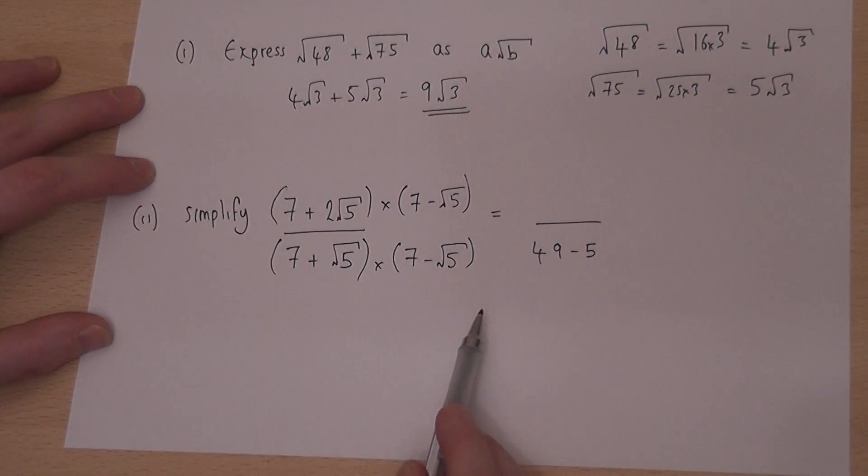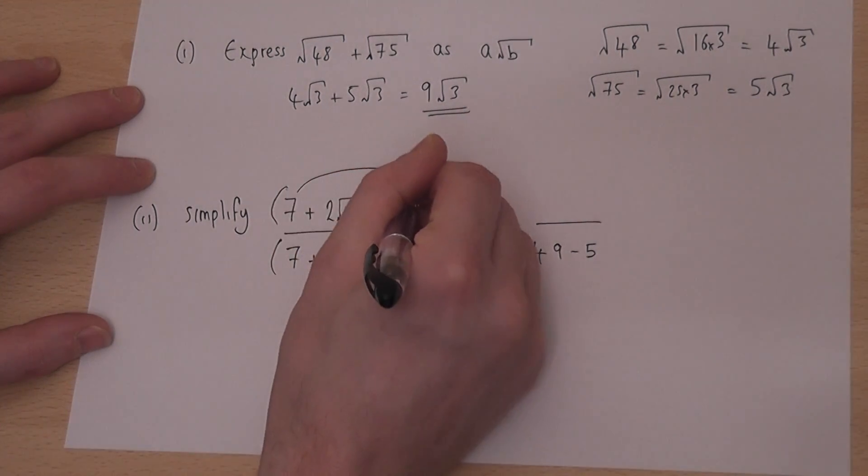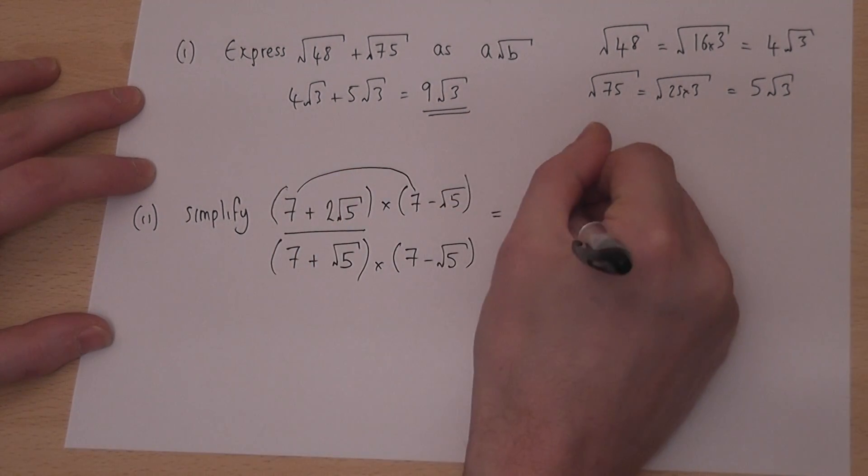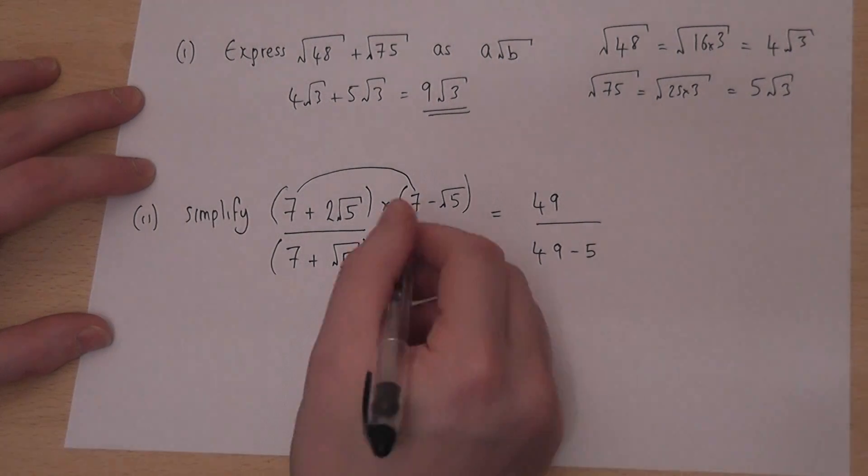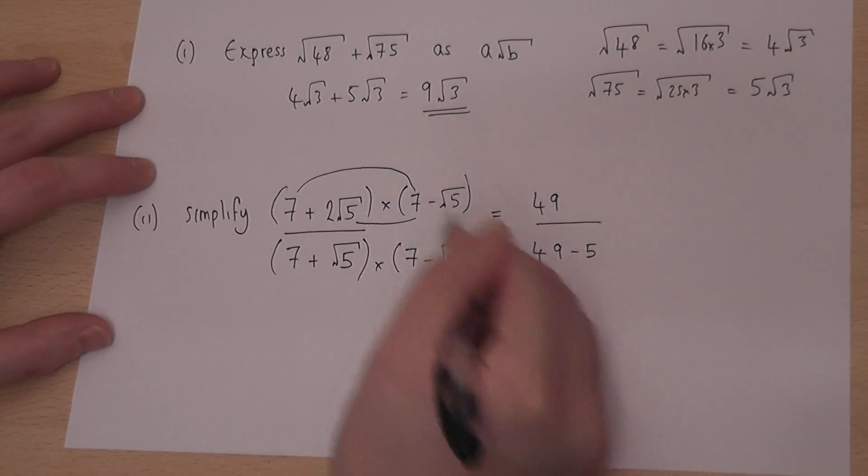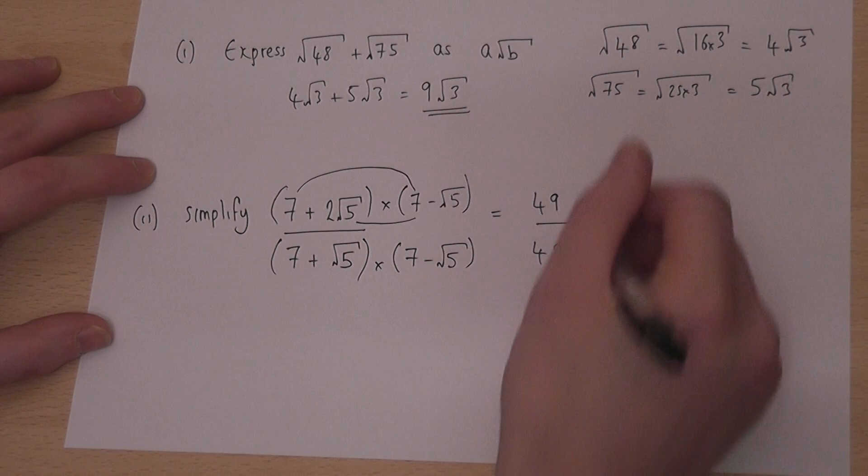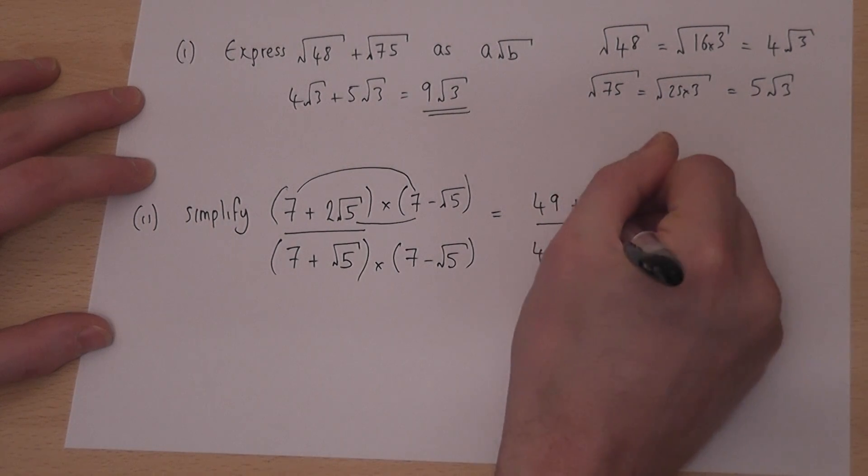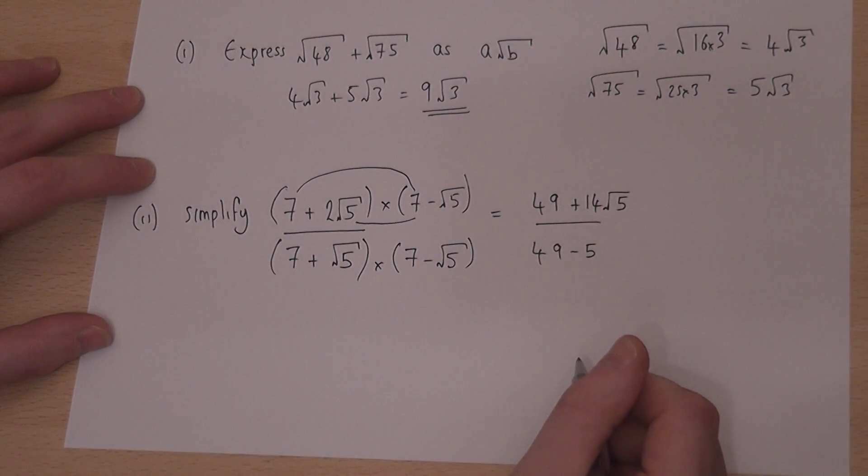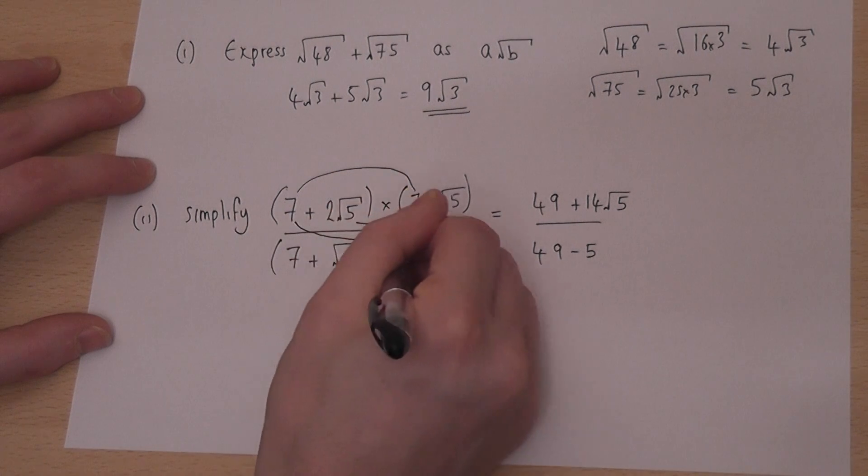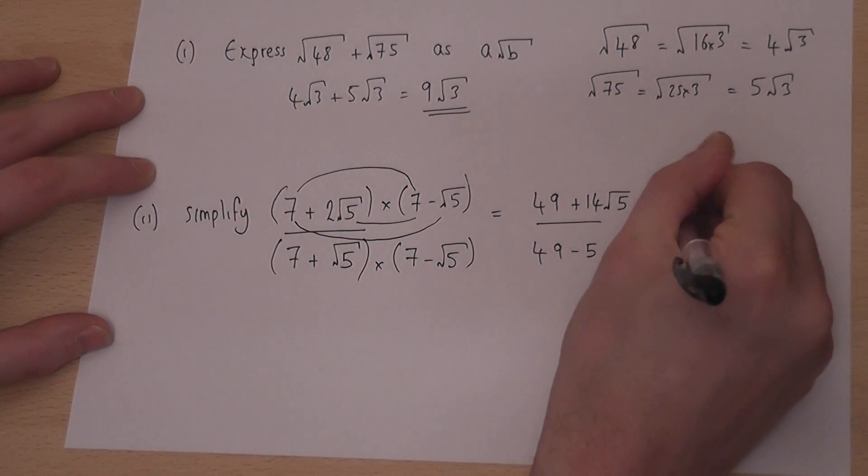We then also work out the top. Now 7 times 7 is 49, and 2 root 5 times 7 is 14 root 5, so plus 14 root 5. 7 times minus root 5 is minus 7 root 5.